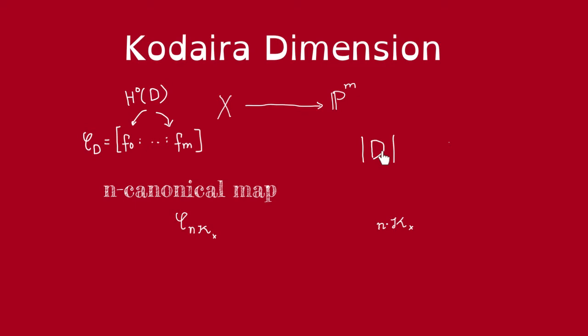Well, among such maps, there are some that are definitely more canonical than others. Of course, the ones that correspond to multiples of the canonical class are going to be more canonical. So we're interested in these maps. They are called the n-canonical maps.